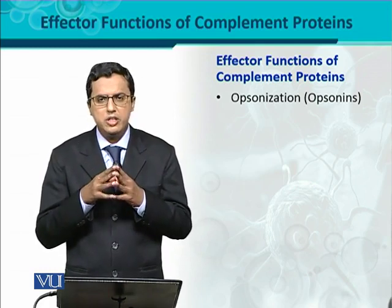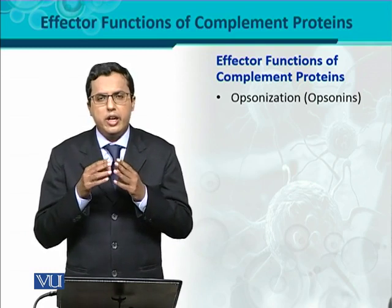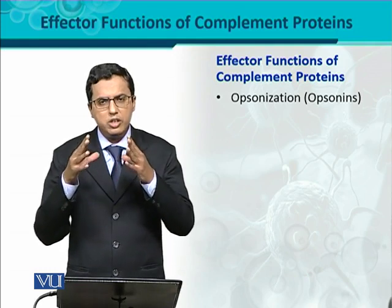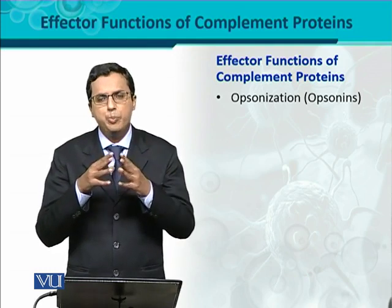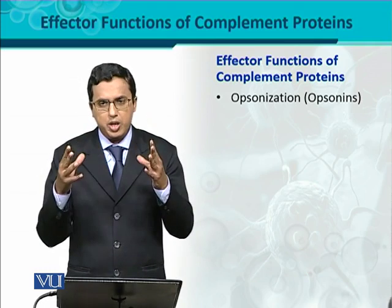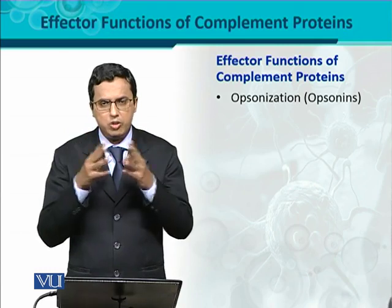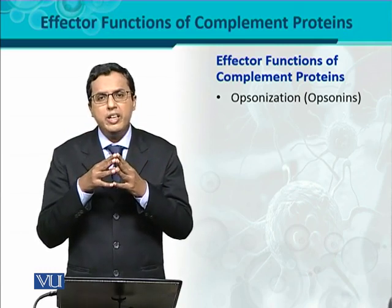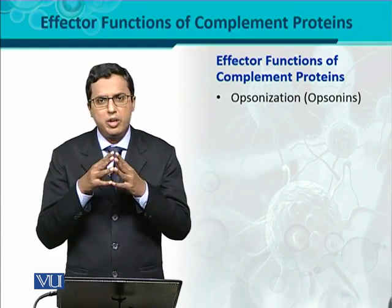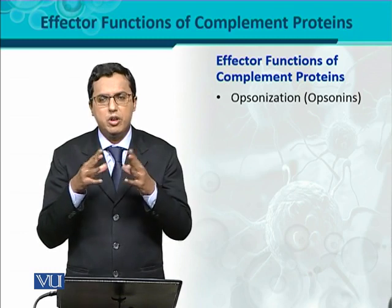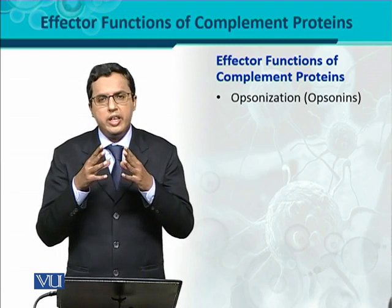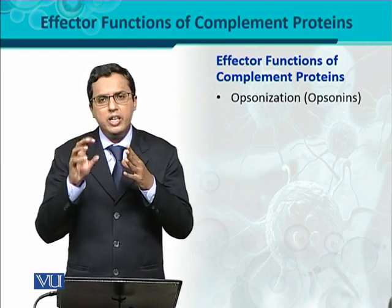The first important function is opsonization. Opsonization is the process by which phagocytosis is enhanced — the process of phagocytosis gets an enhancement through this mechanism, which is called opsonization. Complement proteins play their role in opsonization by acting as opsonins — proteins which cause the process of opsonization.